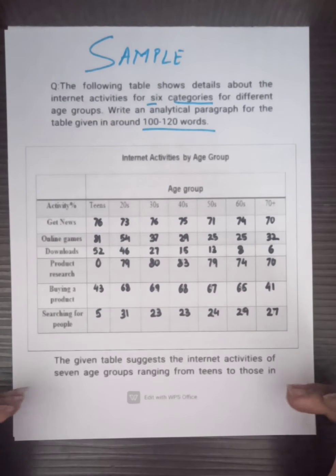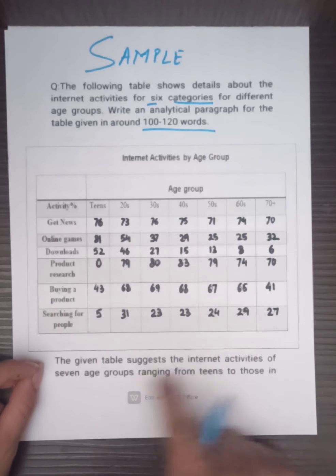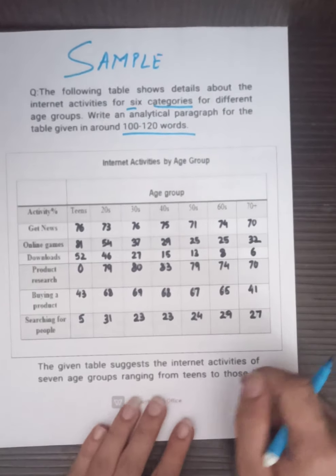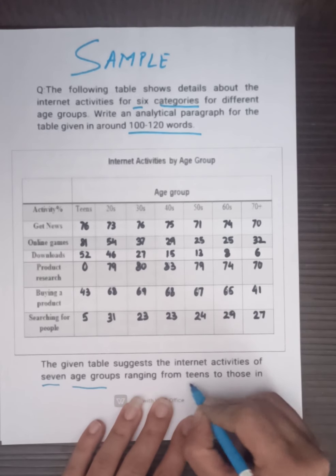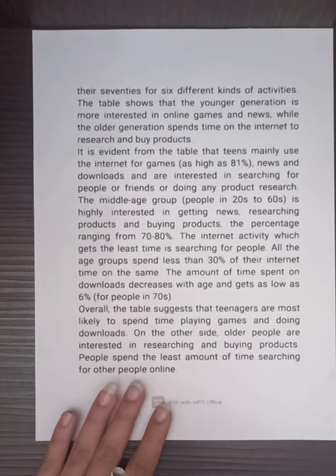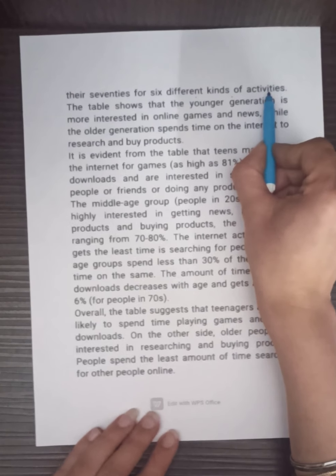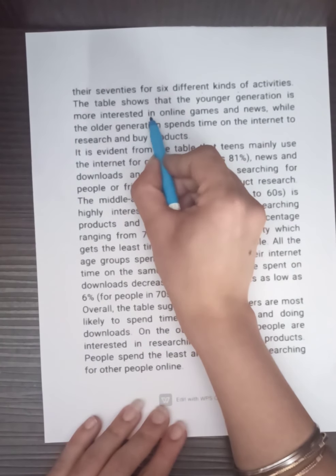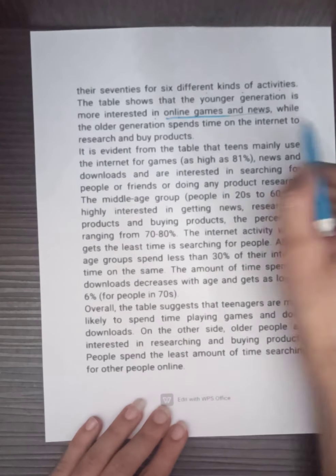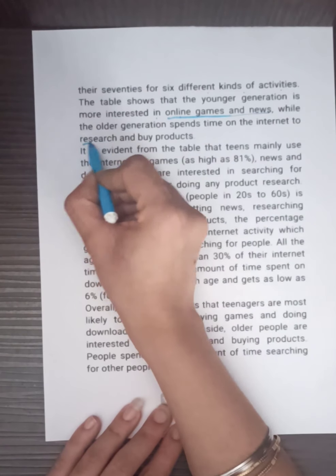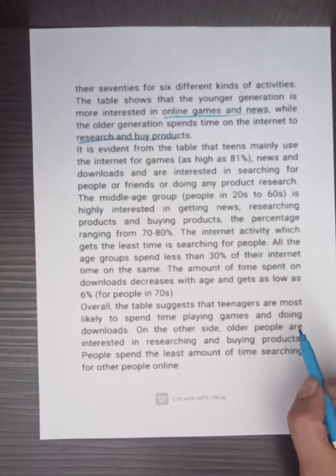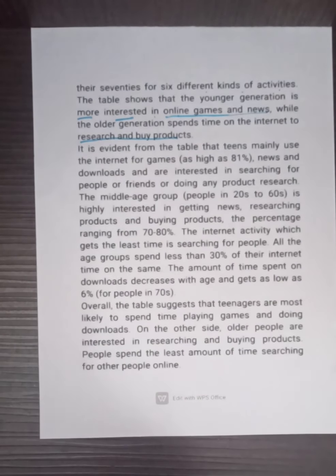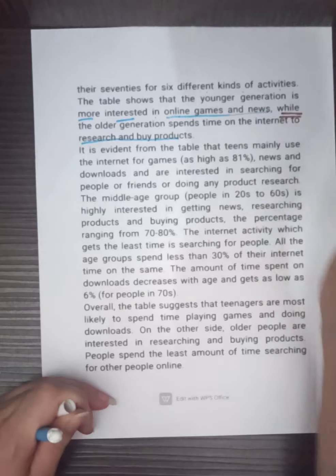My introduction is: 'The given table suggests the internet activities of seven age groups, ranging from teens to those in their 70s, for six kinds of activities.' I have clubbed all the age groups together. The table shows that the younger generation is more interested in online games and news, while the older generation spends time on internet research. I have used comparison words like 'more interested' and 'while' to raise the comparison.